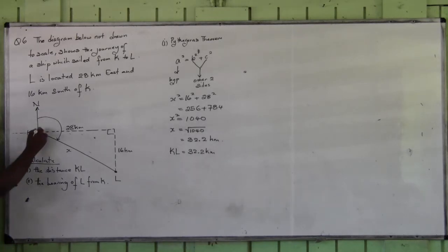This piece of it we already know. What is this piece? Ninety. This is north and this is east. The angle between north and east is ninety degrees. What we don't know is this piece of it. Let's call it alpha. Can we find it? Yes, sir.